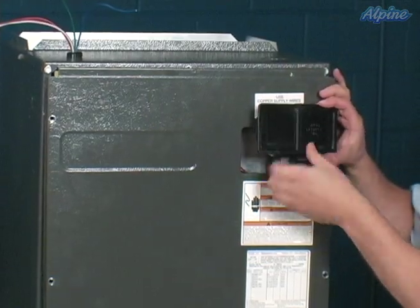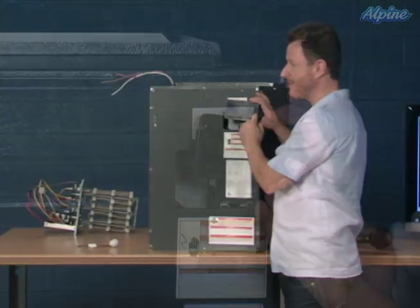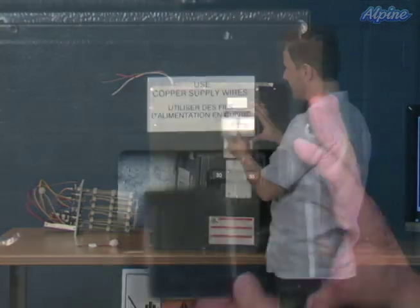And this little plate has a knockout that can be cut. If you have a single breaker, then you cut out half the knockout. If you have a double breaker, such as with the larger 20 kilowatt heater coil, then you cut out both of these.